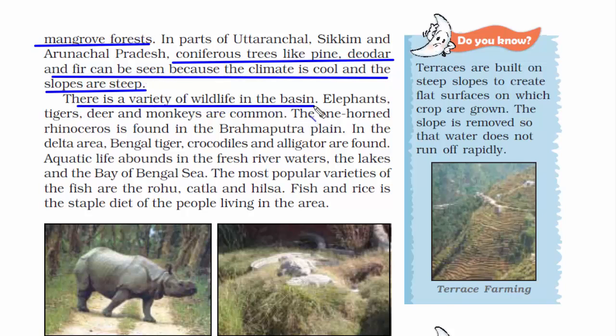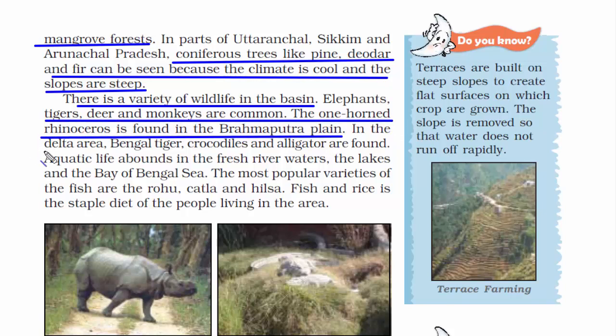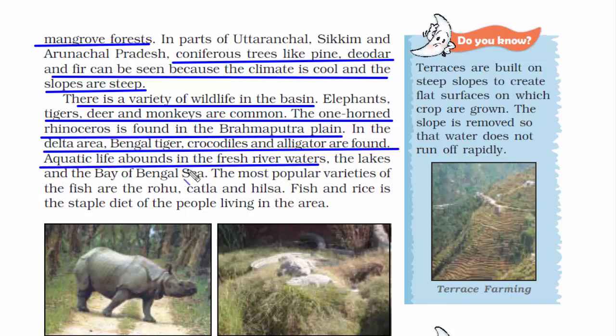There is a variety of wildlife in the basin. Elephants, tigers, deer, and monkeys are common. The one-horned rhinoceros is found in the Brahmaputra plain. In the delta area, Bengal tigers, crocodiles, and alligators are found. There is also rich aquatic life in the fresh river waters, the lakes, and the Bay of Bengal.